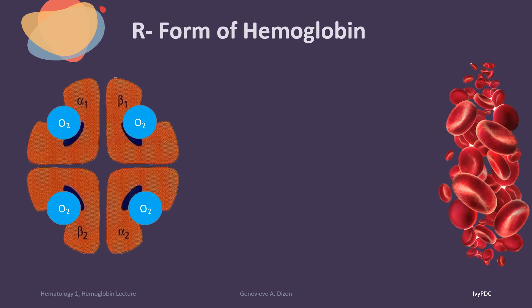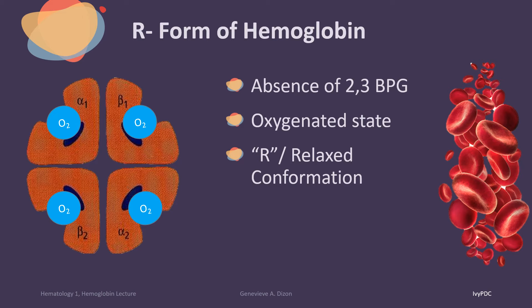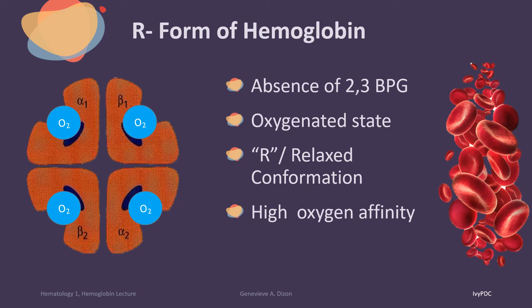As hemoglobin binds oxygen molecules, a change in the conformation of the hemoglobin tetramer occurs, and this releases the 2,3-BPG. When the hemoglobin tetramer is fully oxygenated, it then assumes the relaxed or R-state — the form with high oxygen affinity. When the hemoglobin is in the R-conformation, it is in the relaxed state, seen only in the oxygenated situation where there is an absence of 2,3-BPG, allowing oxygen molecules to bind to hemoglobin easily and giving it a high oxygen affinity.